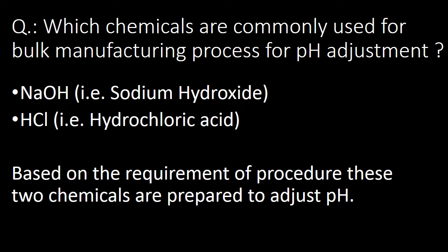Next question: which chemicals are commonly used for bulk manufacturing process to adjust pH? NaOH (sodium hydroxide) and HCl (hydrochloric acid) are used for pH adjustment in bulk manufacturing process. Based on the requirement of the procedure, these two chemicals are prepared to adjust pH.